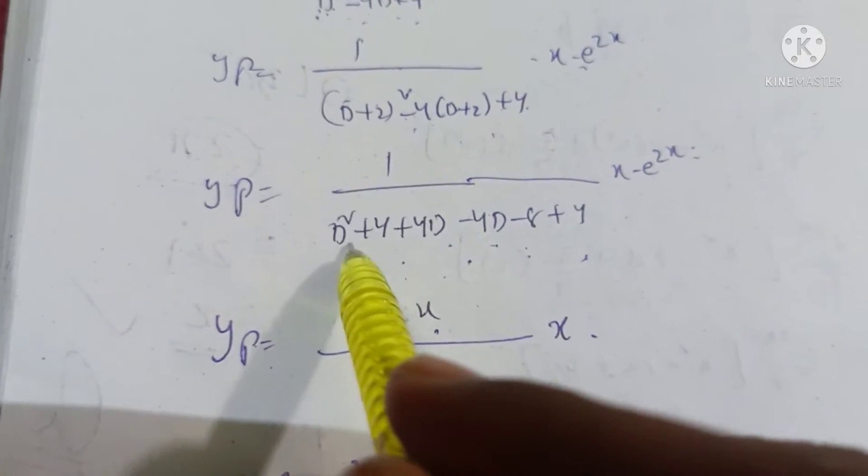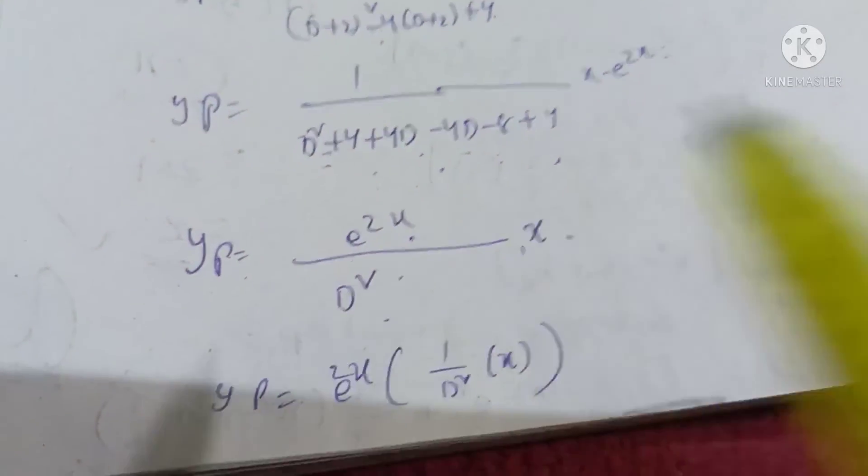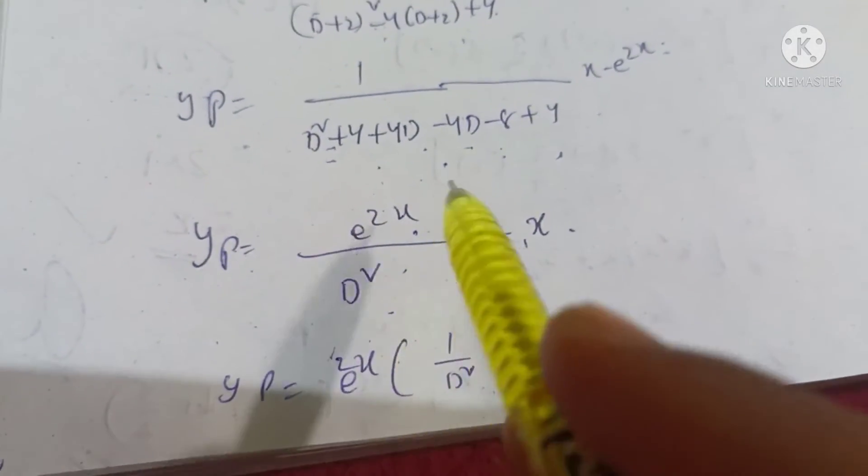4d, 4d cancel. Therefore, e power 2x by d square into x.